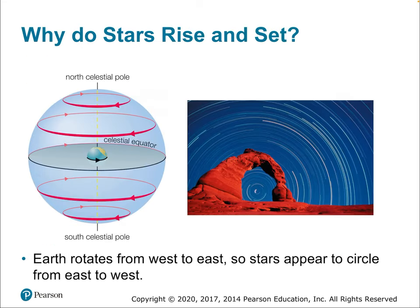Stars rising and setting: if you are standing on the North Pole, all stars in the sky would be circumpolar — none would rise and set; they'd all swirl around you. This apparent motion is completely determined by Earth's rotation around its own axis. There's an axis right through the physical Earth, and Earth spins around that axis, which creates the rising and setting of stars.